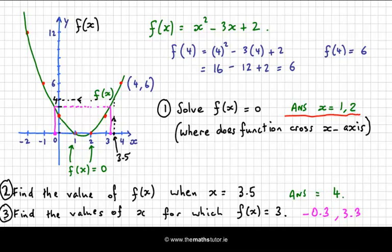And the last one was, find the values of x for which f(x) = 3. Well, f(x) = 3 here. So where does that meet the graph? Go across and down. And we see that if we substituted in -0.3, we would get 3 as our y-coordinate. And if we substituted in 3.3, we would also get 3 as our y-coordinate.